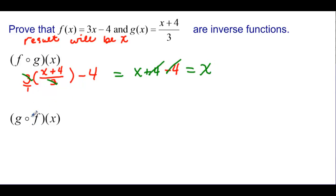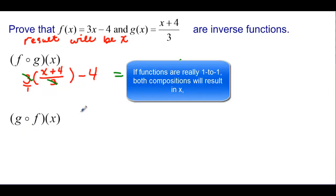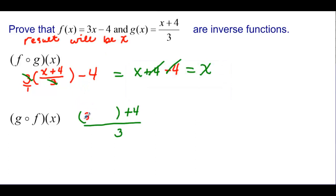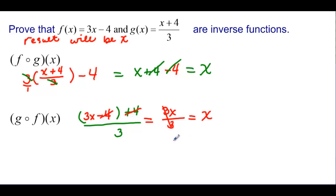It has to work both ways. So we do the g function of f of x: whatever we had for f of x goes in there as (f(x) + 4)/3, and our f function is 3x − 4. We simplify the numerator: the 4 and the negative 4 cancel, giving 3x. Then 3x over 3 — the 3s cancel — and we're left with x. So we just proved that these are really inverse functions of each other.